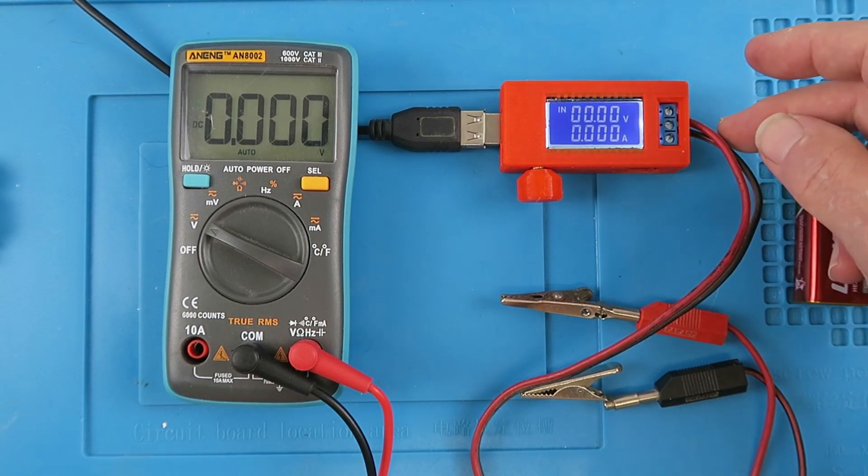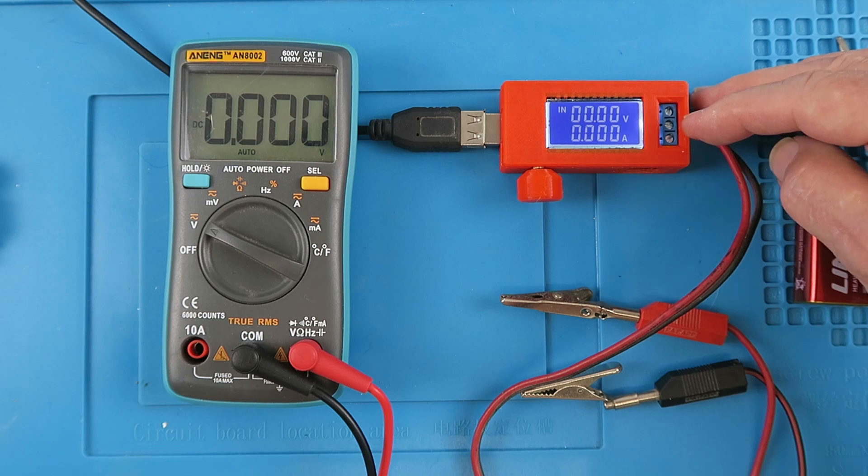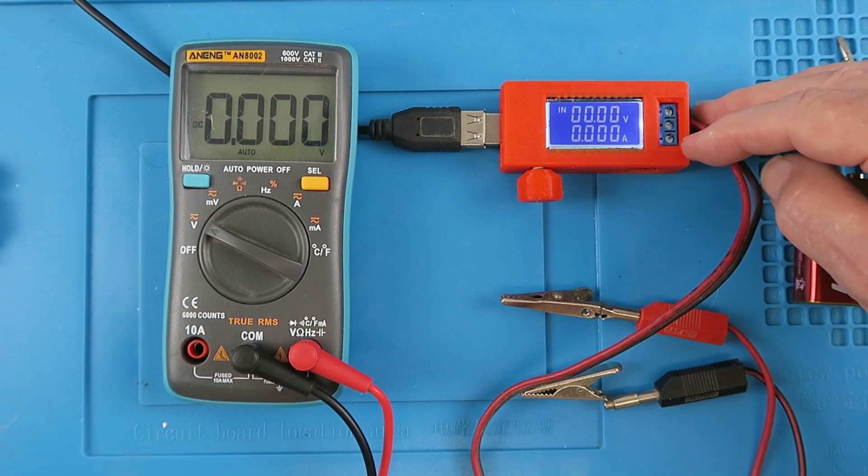The other thing to note is that we need to move the cables around. In this mode, the top one is positive voltage, the center one is current, and the bottom one is common.